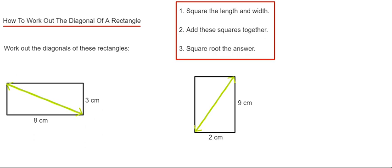So if we square the eight, eight squared is eight times eight which is 64. Then we also square the three, so three squared is nine, that's three times three.